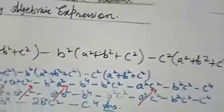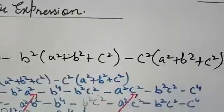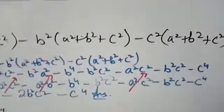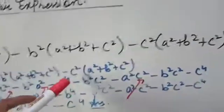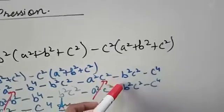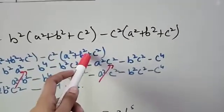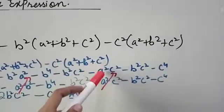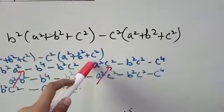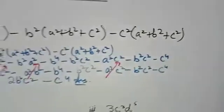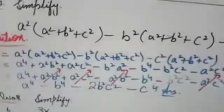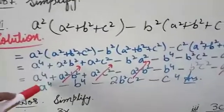Similarly, multiply c² with each term. c² × a² — you can write it as a²c² or c²a², both are the same. c² × b² gives b²c² with a minus sign, and c² × c² = c⁴. Now arrange the results accordingly.